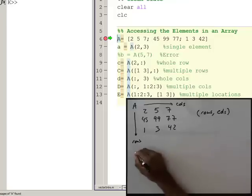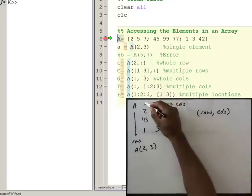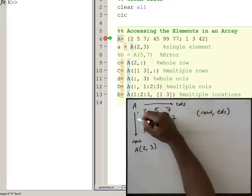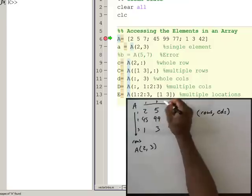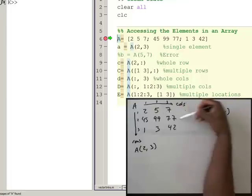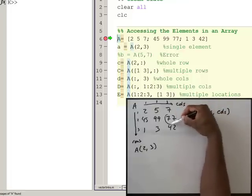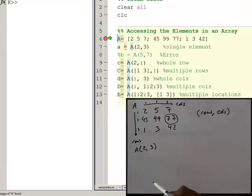So if I did A accessed at 2, 3, this is row 1, row 2, row 3, column 1, column 2, column 3. So 2, 3 is the second row, third column, which would be the value 77.